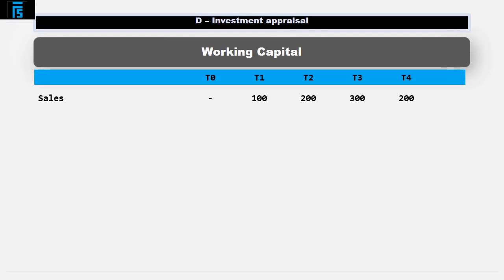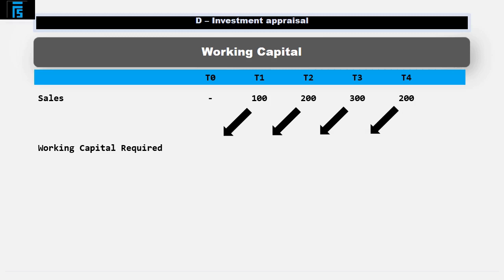Let's set up a pro forma working with time across the top. To remind ourselves how much sales occur in each year, let's add sales as a memorandum row. Now let's work out how much working capital we need to have in place at the start of each year. Remember that the first year happens between T0 and T1 — T0 is the start of the first year and T1 is the end. We assume cash flows that arise over a year arise at the end of that year, so we take 10% of sales for the year and note that down as needing to be in place at the start of that year.